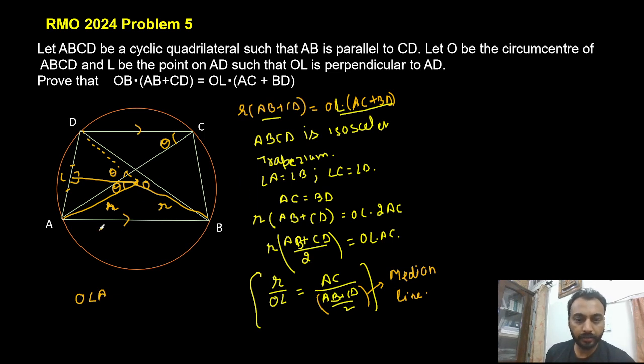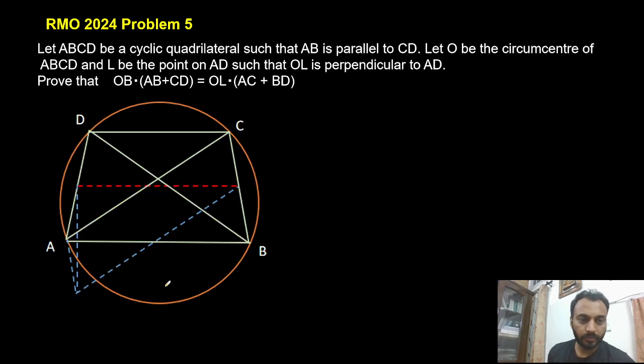Now we need a triangle in which we have AC as well as (AB + CD)/2 so first we can create (AB + CD)/2 which we can make by joining the midpoints. If I say this point is L because it is a midpoint of AD and this point let's say M which is a midpoint of BC, so LM is a median line and its length is (AB + CD)/2.